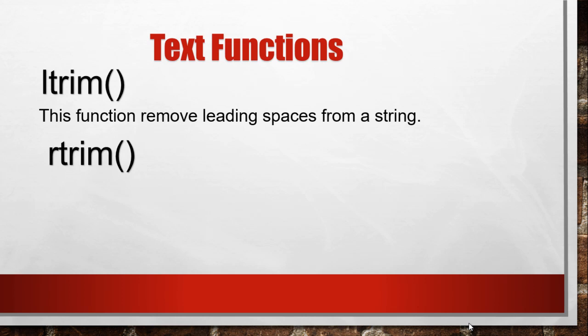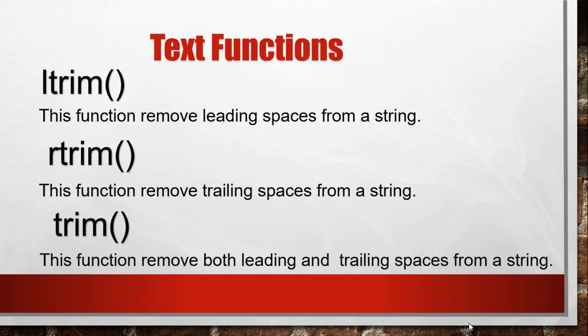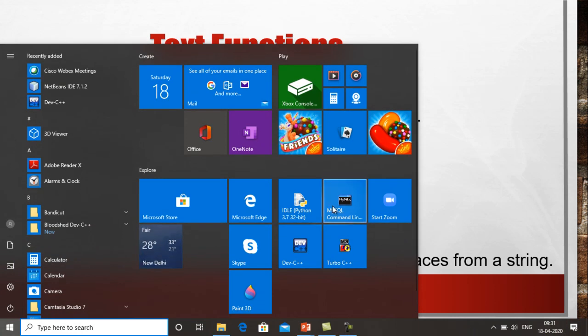There is one more function, RTRIM, which removes the spaces at the end of the given string — these are called trailing spaces. So LTRIM removes leading spaces, RTRIM removes trailing spaces, and TRIM removes both leading and trailing spaces from the string.